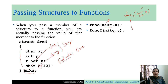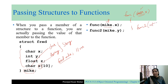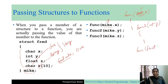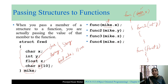Similarly, `mike.y` can be passed. Note that x is a char, not an integer, so you need a char parameter to receive it. For `func2`, we pass `mike.y`, and to receive this integer value we need `int y` as the parameter. For `func3`, we pass `mike.z` with a `float z` parameter. For `func4`, we pass `mike.s` — but s is an array, and the name of an array is the base address of the array.